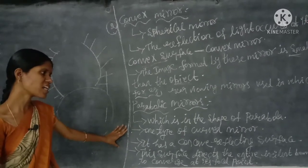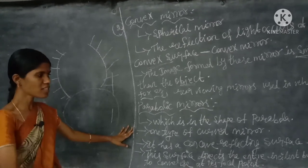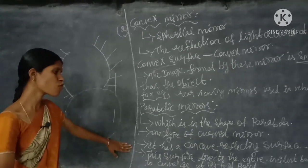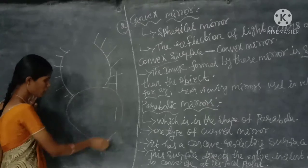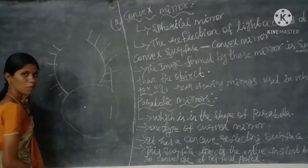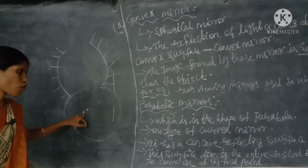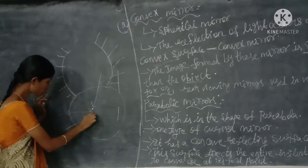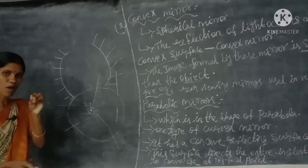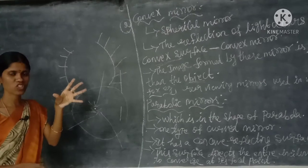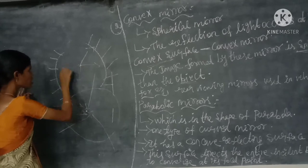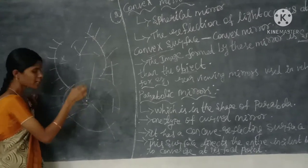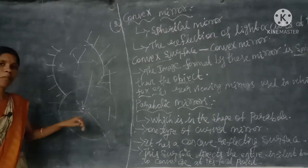The concave reflecting surface directs the entire incident beam of light, which is then converged at its focal point. The center of the parabolic disc is the focal point or focus point. Converged means all the light coming from sunlight meets at one point. That is known as the converge point or focal point. If the light does not converge to a center point, it deviates — that is known as divergence.